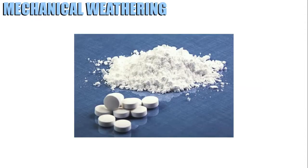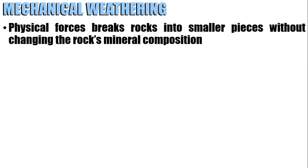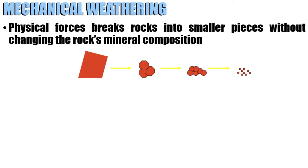Let's start with mechanical weathering. Mechanical weathering is just like crushing a tablet — when you crush a tablet, it's still the tablet, but it is powdered. So in mechanical weathering, physical forces break rocks into smaller pieces without changing the rock's mineral composition. The rock just becomes smaller, but the composition is still the same. Remember, mechanical weathering increases the surface area available for chemical attack, and chemical and mechanical weathering occur simultaneously.